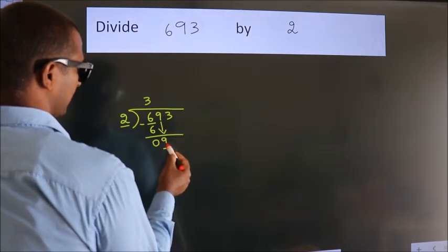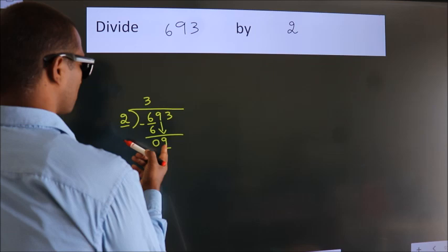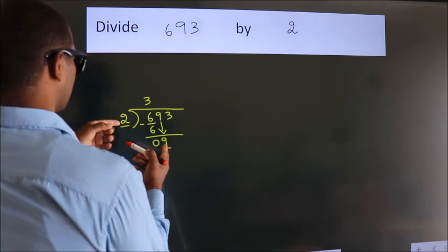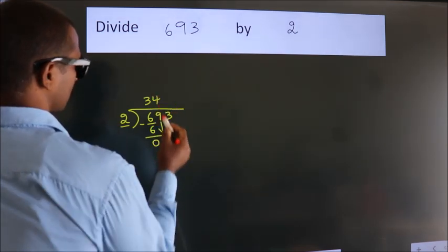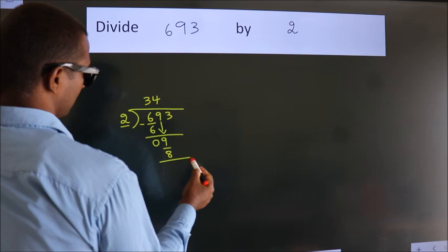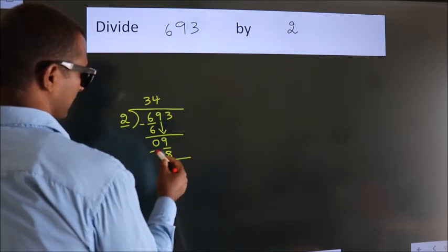Now we subtract. We get 1. After this, bring down the beside number, so 3 down, so 13. A number close to 13 in 2 table is 2 sixes 12.